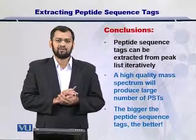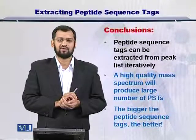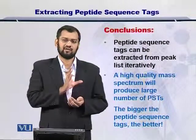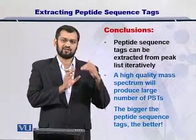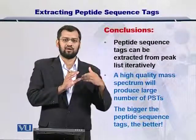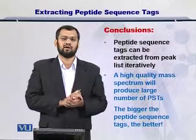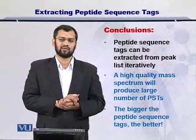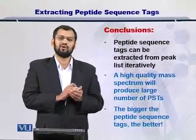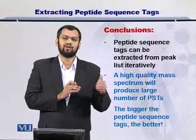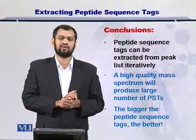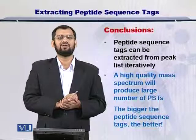So in conclusion, the peptide sequence tags can be extracted from the peak list by looking at the differences between the next peak and the previous peak. And if there is an amino acid difference between the next and the previous peak, then you start searching for more amino acids from the next peak. And by combining such amino acid tags, you have the peptide sequence tag. A high quality spectrum will give you lengthy or multiple amino acid sequence tags. Of course, the lengthier the sequence tag, the better, because it will help us in identifying the protein from the database.